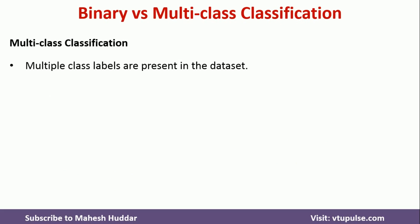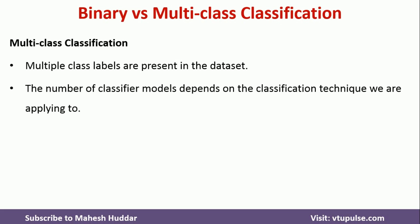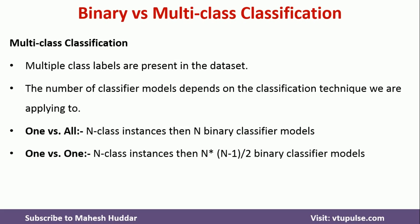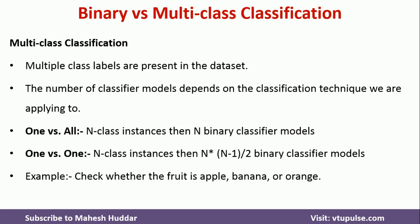In multi-class classification, the number of class labels will be more than two — that is, multiple class labels are present in the given dataset. The number of classifier models depends on the classification technique we apply. There are two techniques: one versus all and one versus one. Unlike binary classification which needs only one model, here we need more than one model. An example of multi-class classification is checking whether a given fruit is apple, banana, or orange — we have three types of fruits, which means more than two labels, making it a multi-class classification problem.